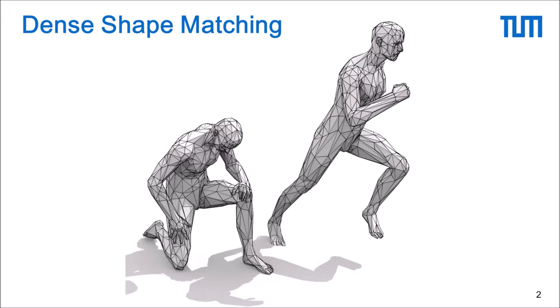In particular, we want to find dense point-to-point correspondences for a given pair of input shapes. One assumption that a lot of prior work relies on is that the two input shapes are nearly isometric. This is for example given if you look at the same object in two different non-rigid poses like in the example here.